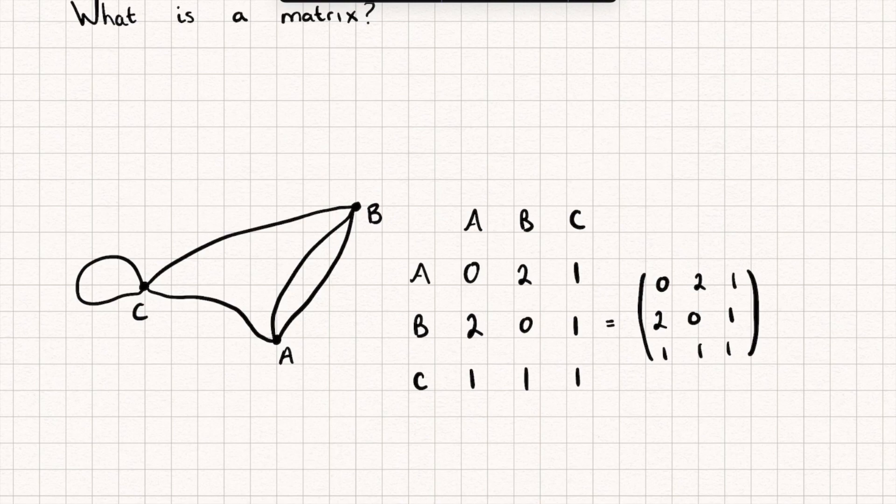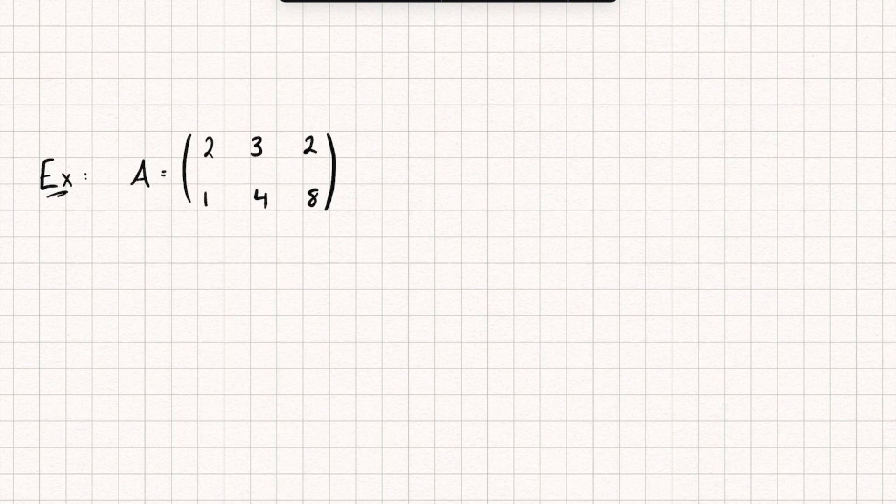We also want to be able to describe these matrices. Here's an example of a matrix. You can see this is our matrix A. We usually use a capital letter to describe our matrices. We can talk about the dimension of a matrix, which is just how many rows and columns it has. We use the letter M to represent the number of rows and the letter N to represent the number of columns. So we say we have an M by N matrix.